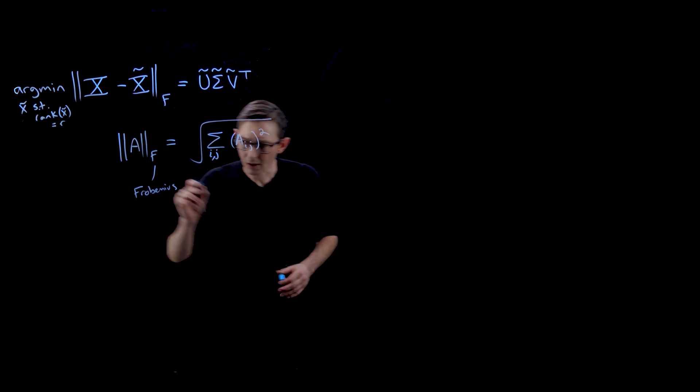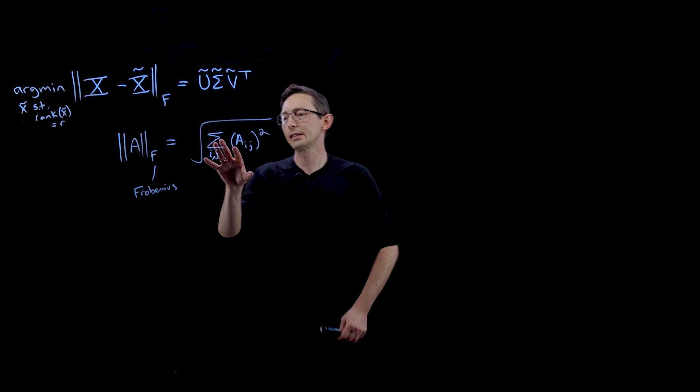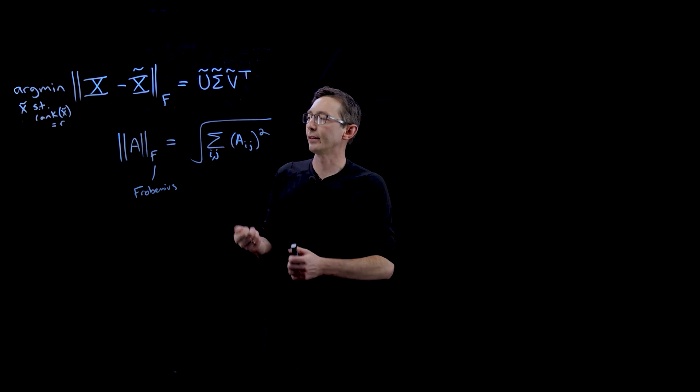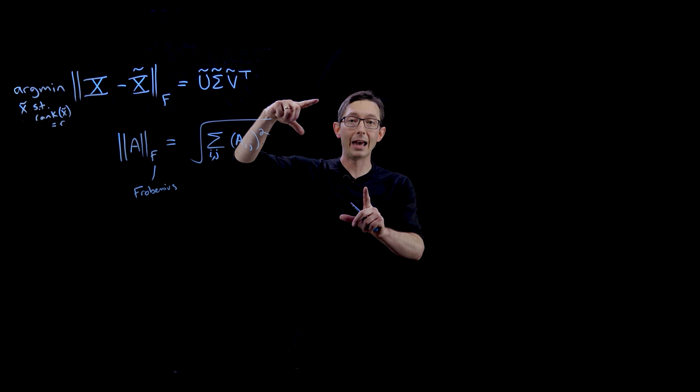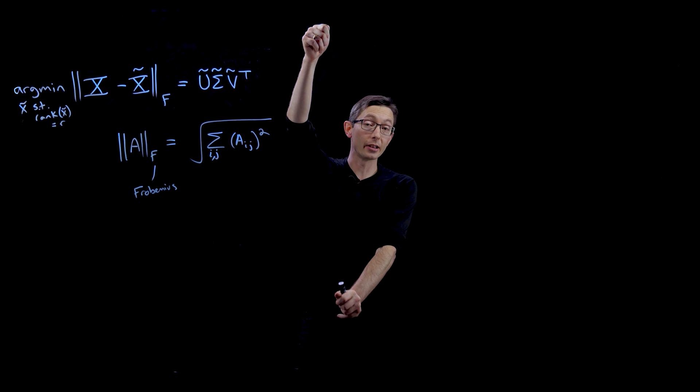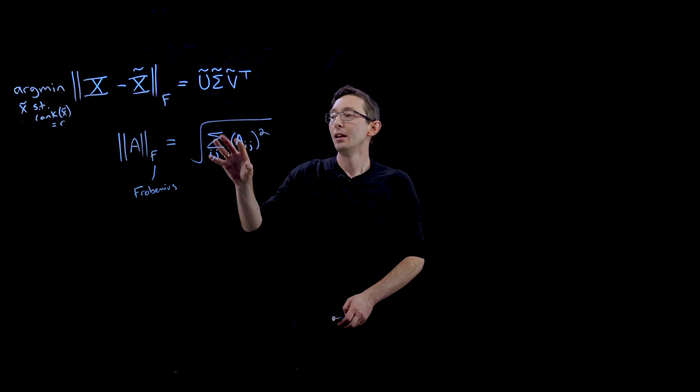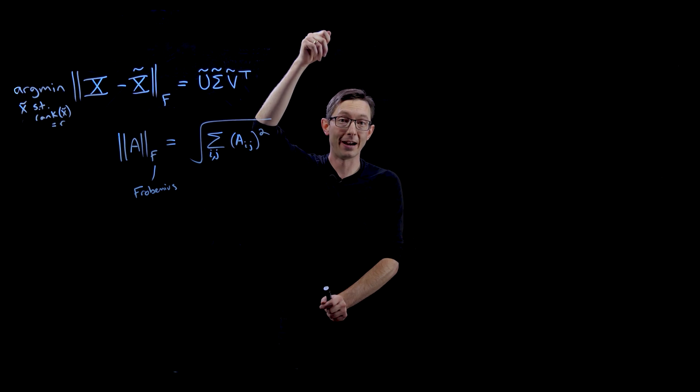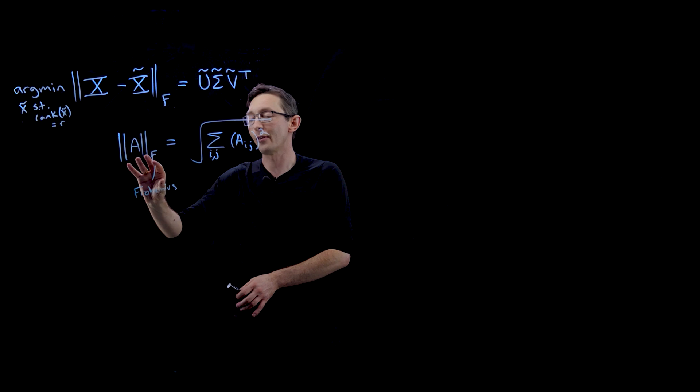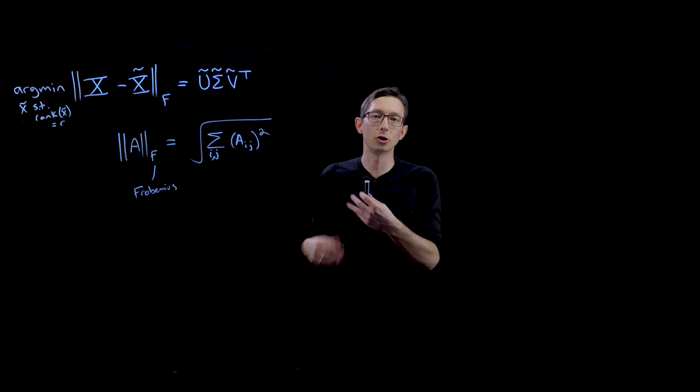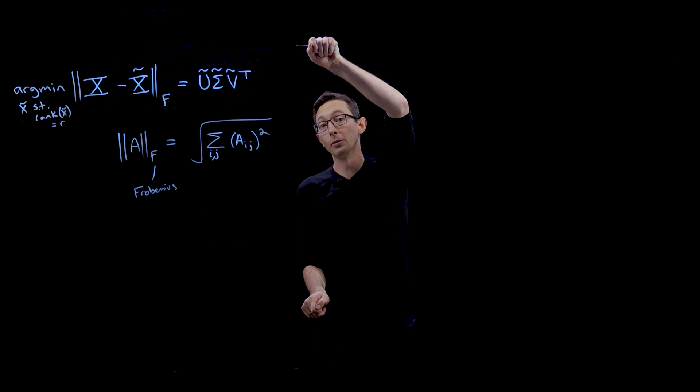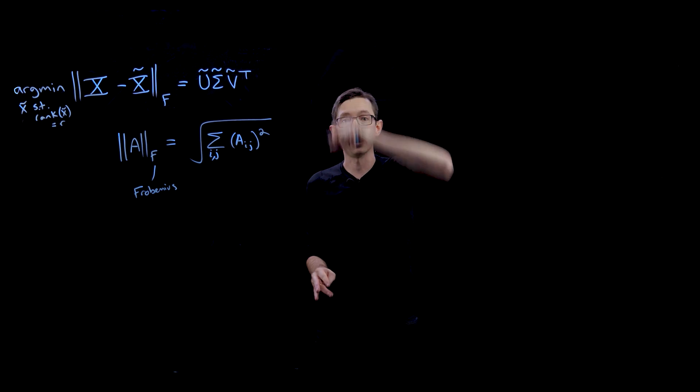The Frobenius norm is really simple. It's essentially what you get if you take this matrix A and you reshape it into a really tall N times M by one vector. This would just be the two-norm of that vector. So the Frobenius norm of a matrix is essentially the two-norm if you turn that matrix into a really big vector.